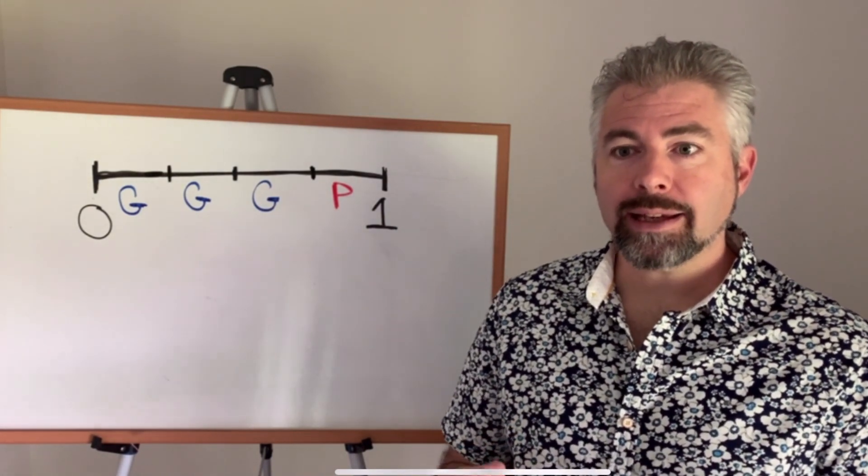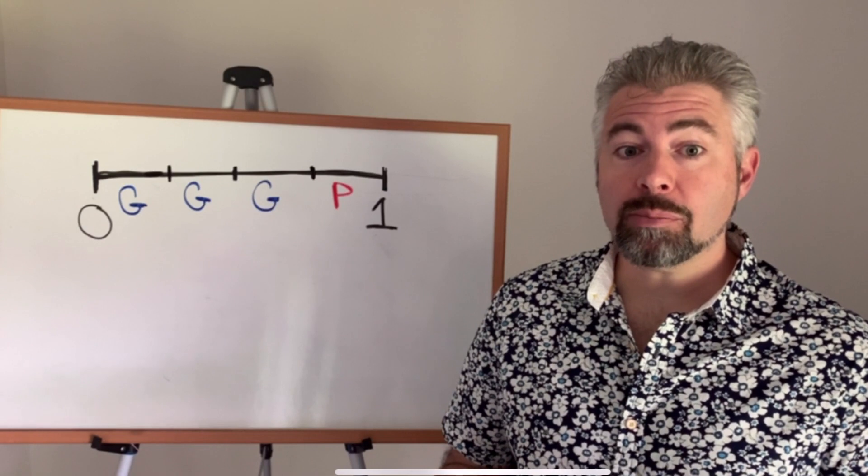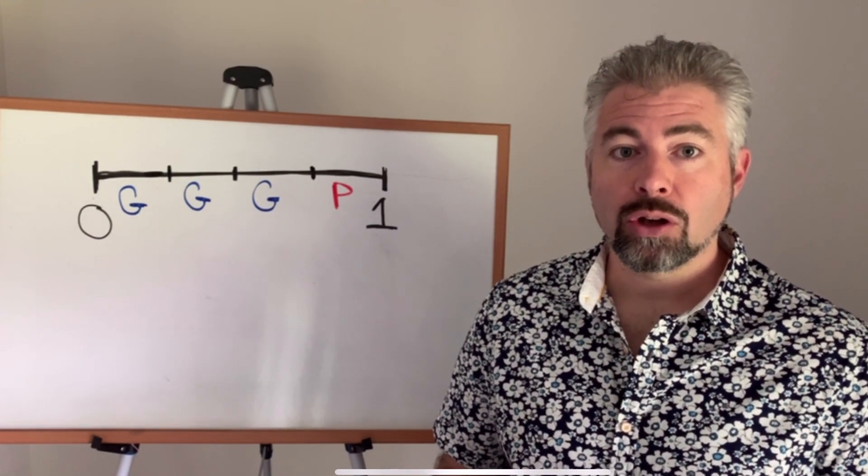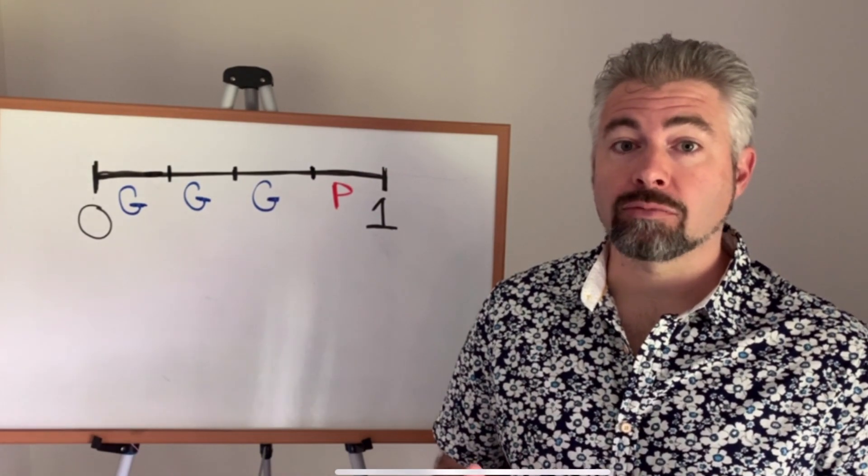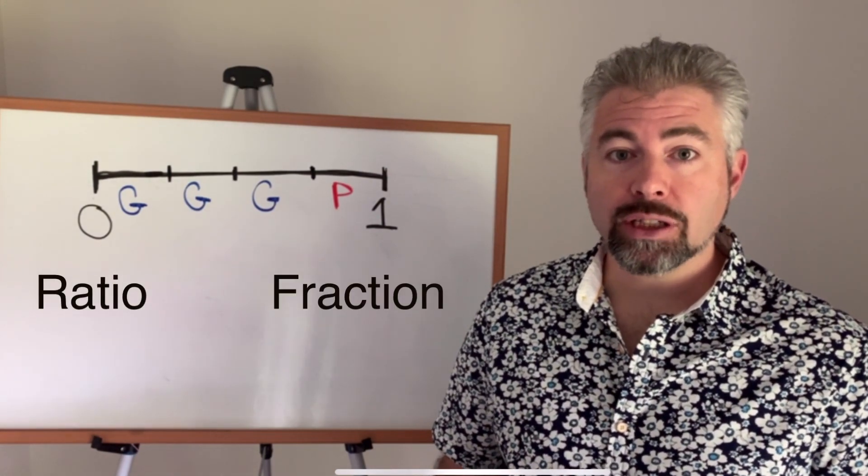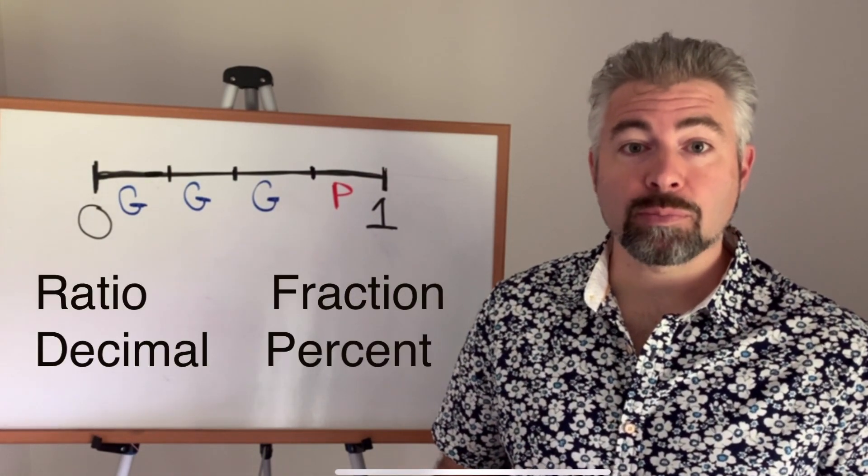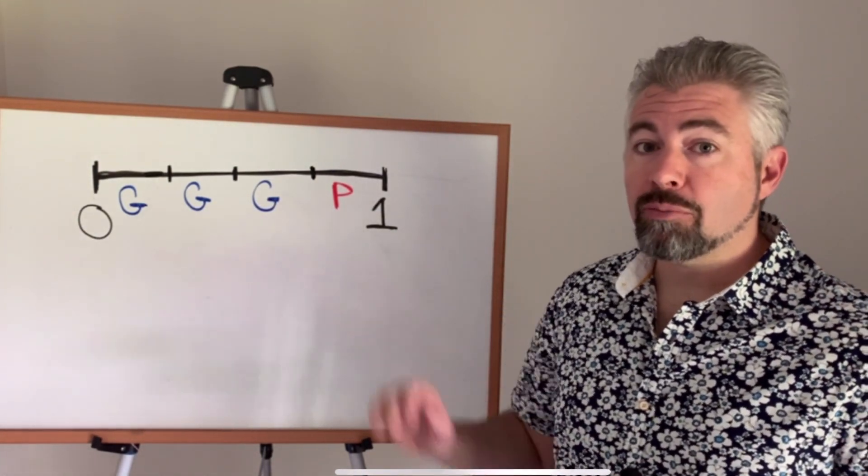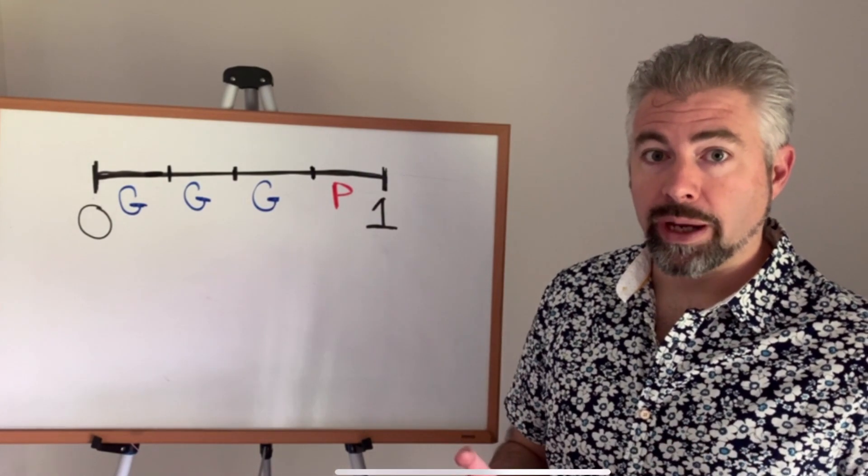But probability can get a little bit confusing, partially because there are so many ways to represent the same probabilities. We can represent probability as a ratio, as a fraction, as a decimal, or as a percent. Let's look at another example and see how we could represent this same probability a few different ways.